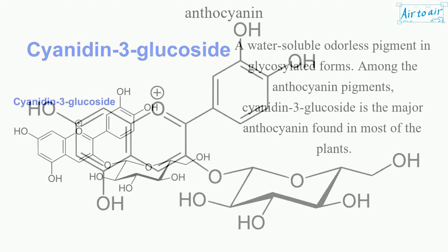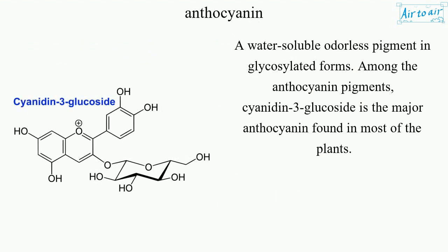Anthocyanin is a water-soluble, odourless pigment found in glycosylated forms. Among the anthocyanin pigments, Cyanidin-3-glucoside is the major anthocyanin found in most plants.